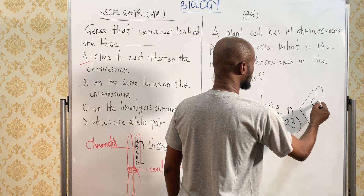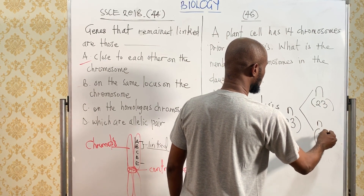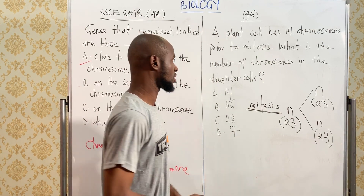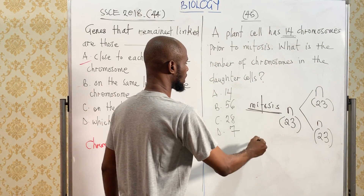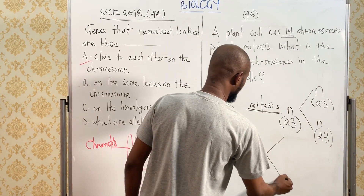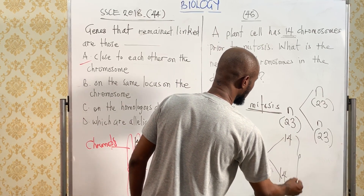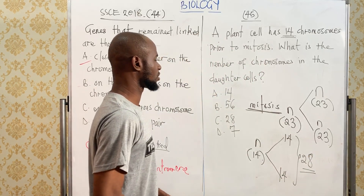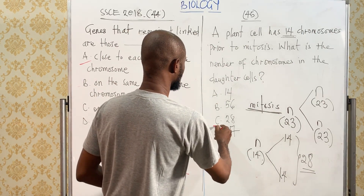So you give rise to N — the first daughter cell is going to be 23, and the second daughter cell is also going to be N, that is, 23. Now, what they are telling us here is that prior to cell division, the parent cell about to undergo mitosis has 14 chromosomes. So let's assume our N is 14 — we're going to give rise to two daughter cells each with 14. When you add these together, you have 28 chromosomes in total across the daughter cells. So the answer is 28.